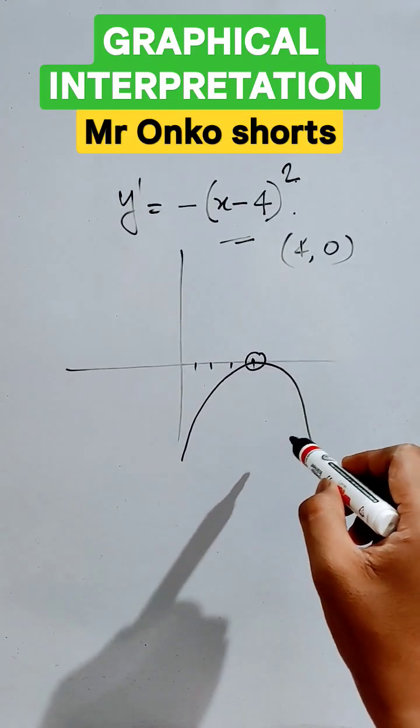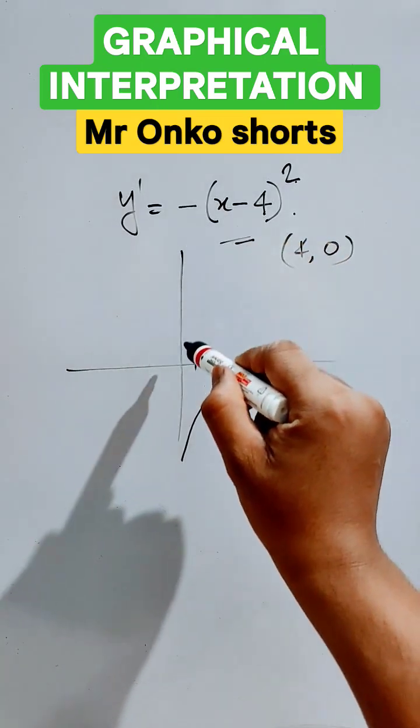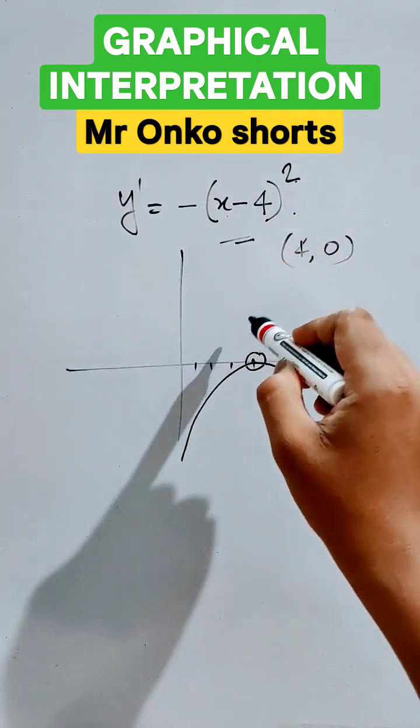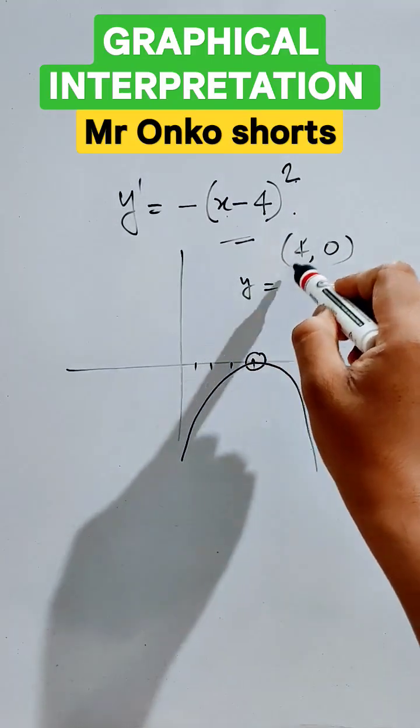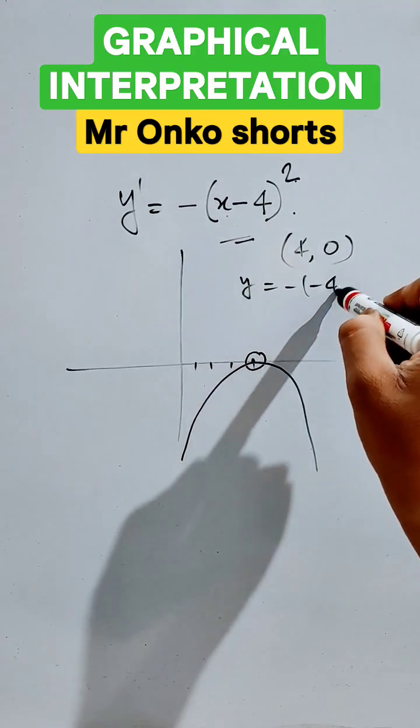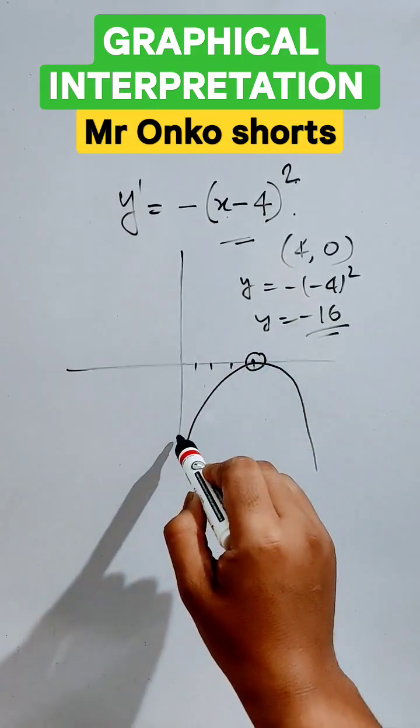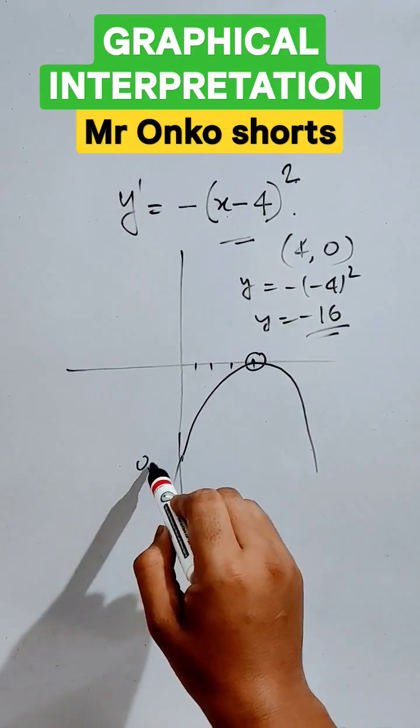If you want to know at which point it will intersect the y-axis, you have to put x equals zero. So if you put x equals zero, you will get y equals minus of minus four squared, that is y equals minus 16. So it will cut at zero comma minus 16.